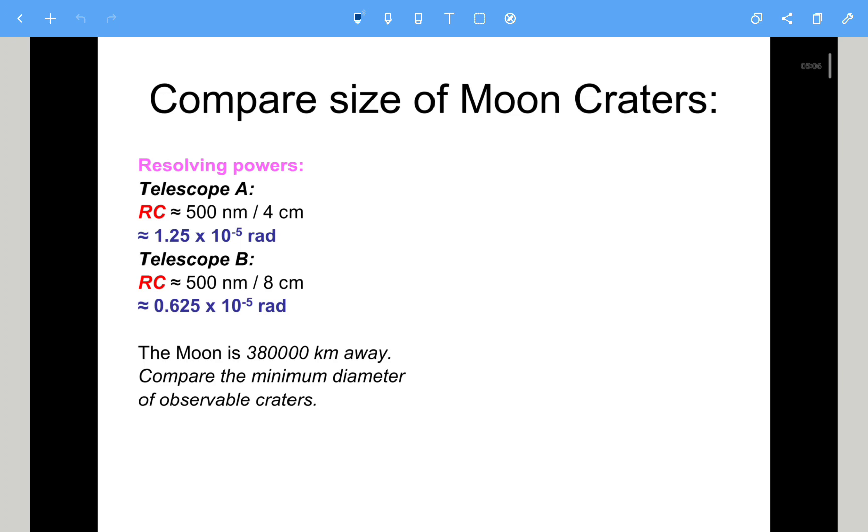Right, so let's have a look at this one. So remember, we need this for each one. What we're going to find is the arc length, which would be the diameter of the crater itself. So let's do the first one. The angle would be 1.25 times 10 to the minus 5 radians, and the distance is 3.8 times 10 to the 8 meters. We're going to use theta equals S over R.